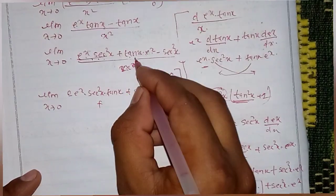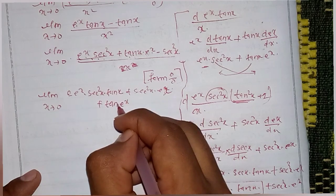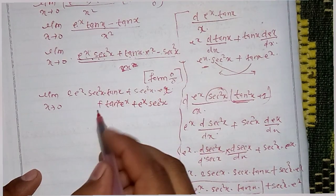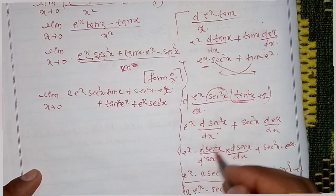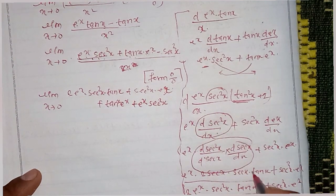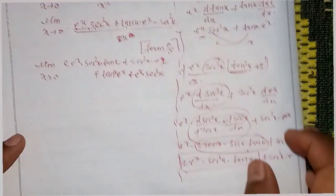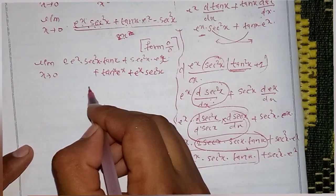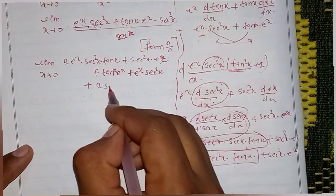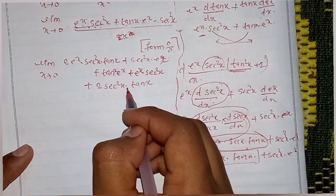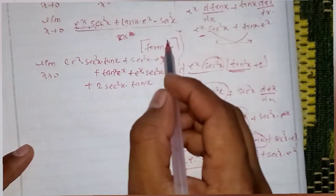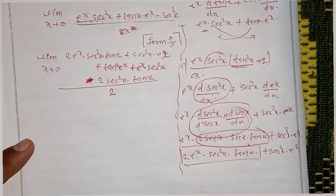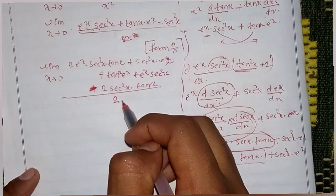Now we have 2x square, 1 power plus plus, tan power x is already done. So tan x plus 1 power x into sec square x. Now sec square x is the derivative of tan x. So we have 2 sec square x — so this is the derivative expression.